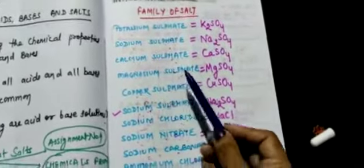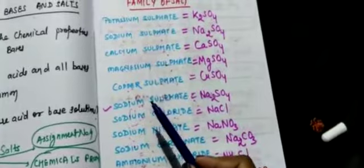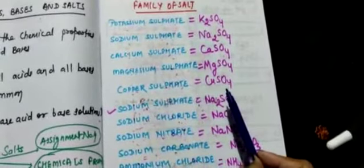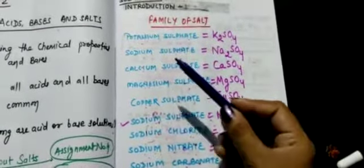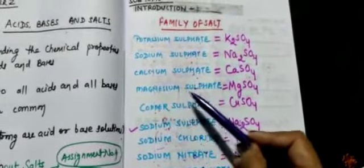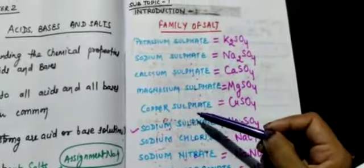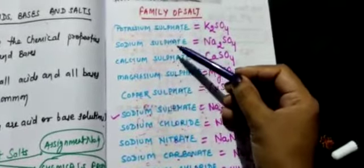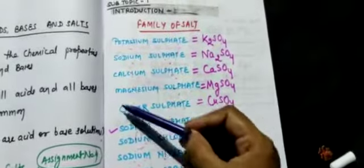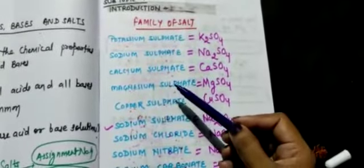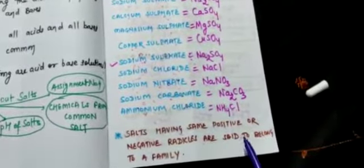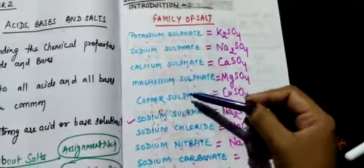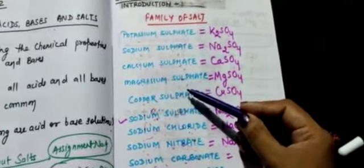Potassium sulfate, sodium sulfate, calcium sulfate, magnesium sulfate — these are the formulas. From chemical name to chemical formula, you know how to write from your 9th class. So here, potassium sulfate, sodium sulfate, calcium sulfate, magnesium sulfate, copper sulfate — all these five examples contain sulfate. They belong to the sulfate family because they have the same negative radical — sulfate is common for all of them.